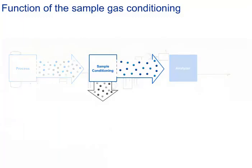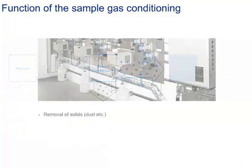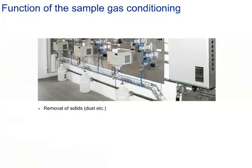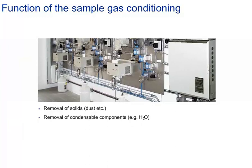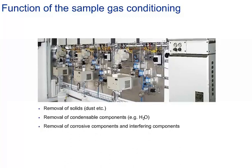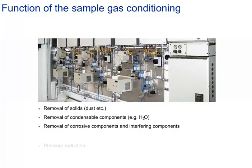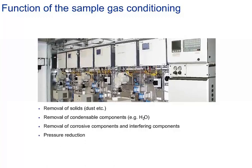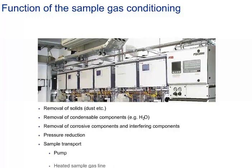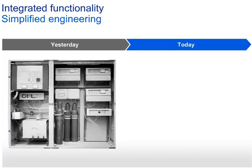The sample handling system has the ability to condition all kinds of gas mixtures for a reliable measurement. It can be tailored exactly to the needs of a specific measuring point in a process — superior and more flexible than all other methods. The main tasks include: removal of solids; removal of condensable components like water content; removal of corrosive and interfering components; pressure reduction to a range acceptable for the measuring sensors; and sample transport with special gas pumps and heated sample gas lines. These modern modules with their integrated functionalities drastically reduce the space needed for system integration.